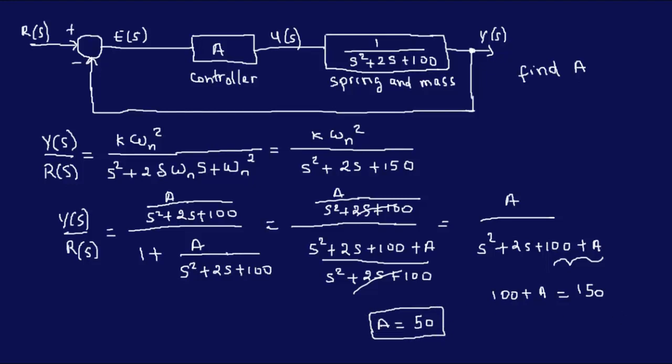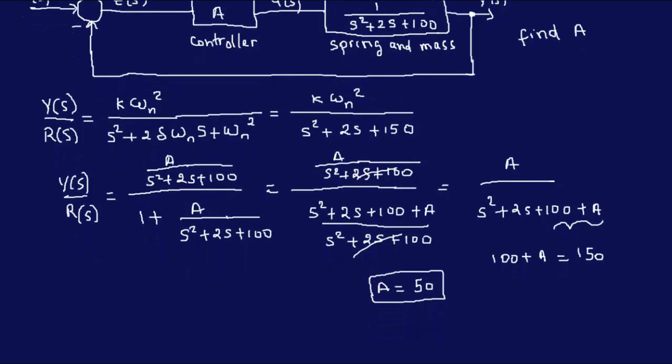So that's it right there. And then the follow up question here is saying if A is adjusted so that the second order closed loop system model is this right here, then the system damping ratio is most nearly what?